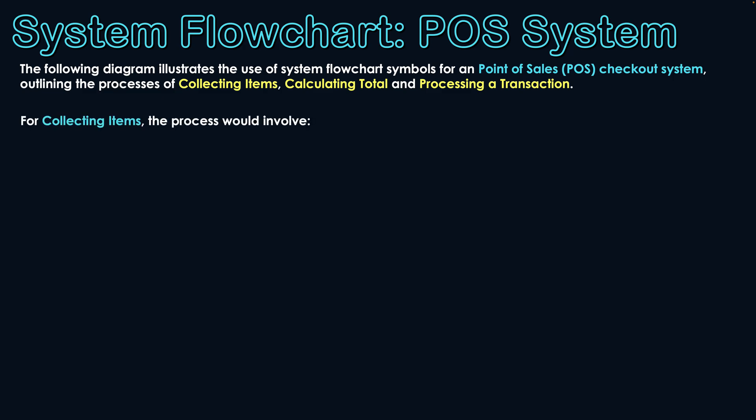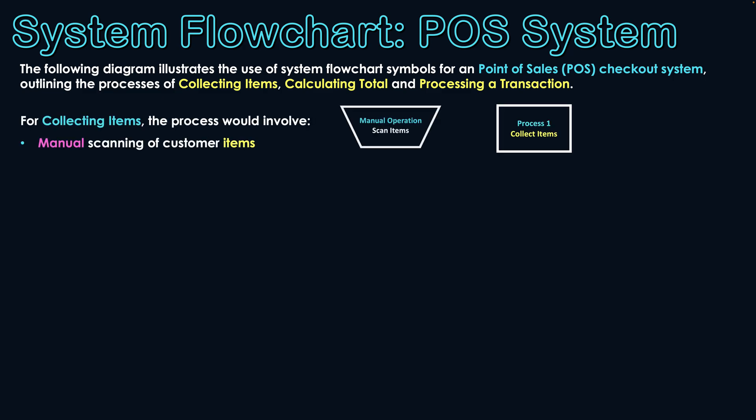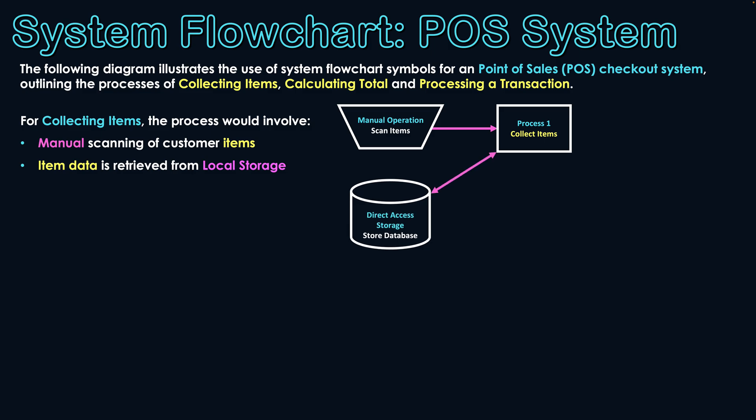First, we have collecting the actual items. We need to scan multiple items, and that process of scanning is a manual operation — whether it's a customer doing it at a self-checkout terminal or an employee doing it for the customer. Each item needs to have its barcode scanned in order to be registered by the system. Each time a barcode is scanned, the system references the store database and maps that primary key of the barcode to an actual product, then retrieves its information.